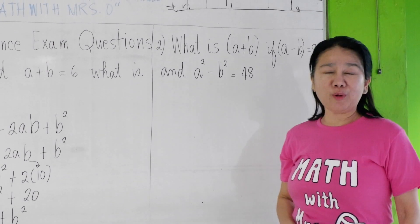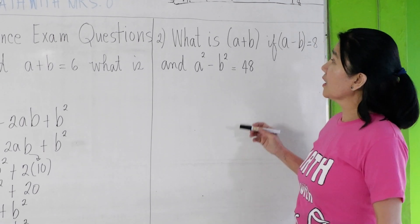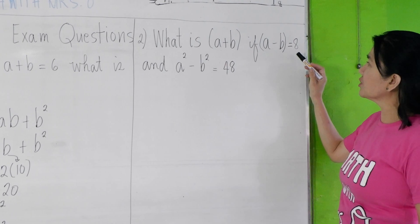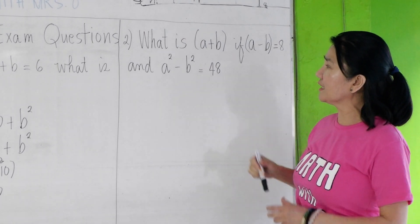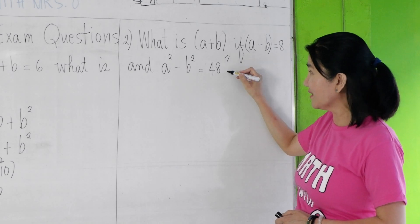Let's move on to problem number 2. What is a+b if a-b equals 8 and a²-b² equals 48? There should be a question mark here.